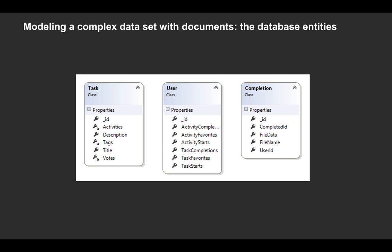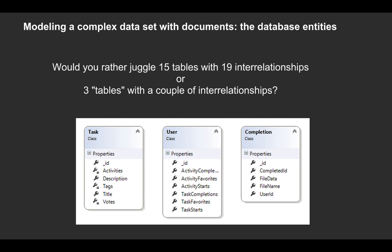If you're considering working with a document database and there's some resistance from your team — maybe they say it's not really for us, or they're freaked out by the lack of a schema — or you're talking to your manager and need something to convince them, I think this is the fundamental question: would you rather juggle 15 tables and 19 relationships, or three collections with a couple of interrelationships? Which is simpler to maintain, evolve, and bring new people onto? Once you verify that speed and price are right, simplicity is one of the main selling points of document databases and why you should start using them.